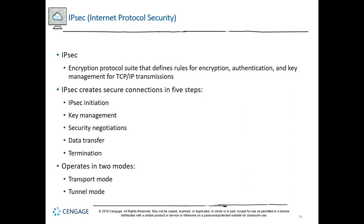IPsec, or Internet Protocol Security, is an encryption protocol suite that defines a set of rules for encryption, authentication, and key management for TCP/IP transmissions. It is an enhancement to IPv4 and is native to IPv6. IPsec works at the network layer of the OSI model, adds security information to the headers of all IP packets, and encrypts the data payload. IPsec creates secure connections in five steps, beginning with IPsec initiation: noteworthy traffic, as defined by a security policy, triggers the initiation of the IPsec encryption process.